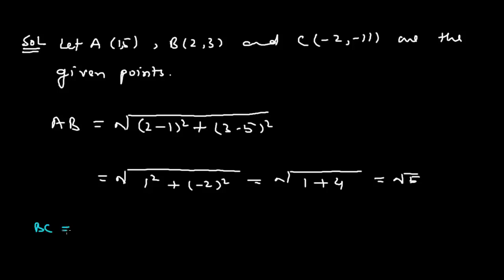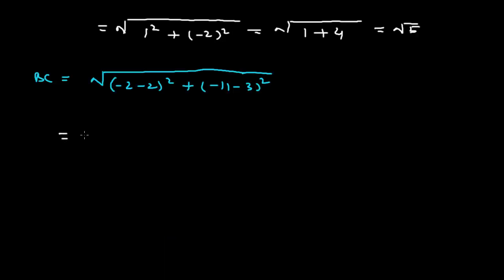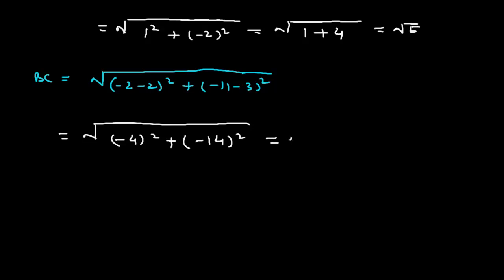Now we shall find the distance between points B and C. We subtract 2 from -2, giving us (-2 minus 2) squared plus (-11 minus 3) squared. If we further solve this, it equals (-4) squared plus (-14) squared, which equals 16 plus 196.